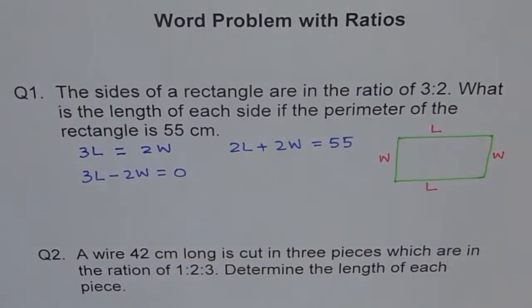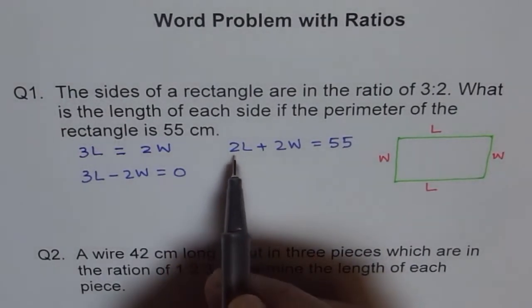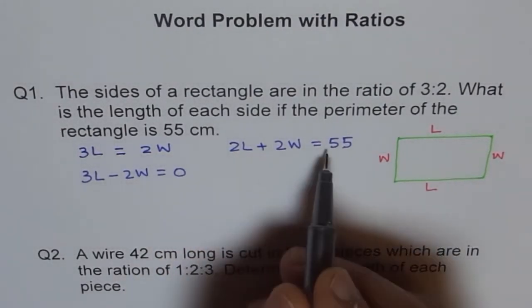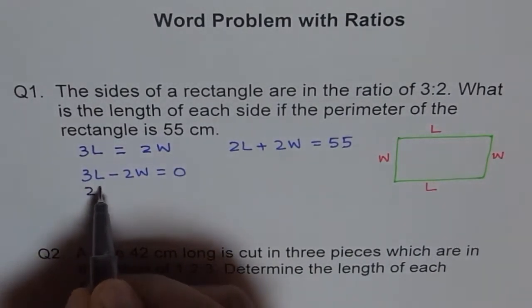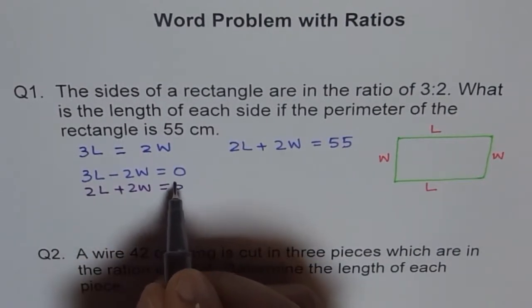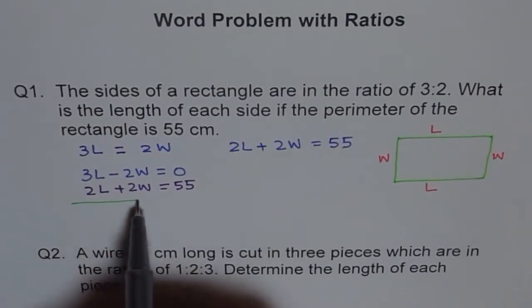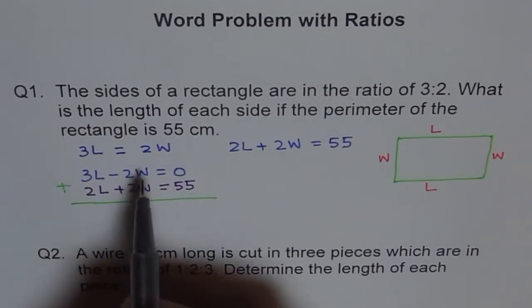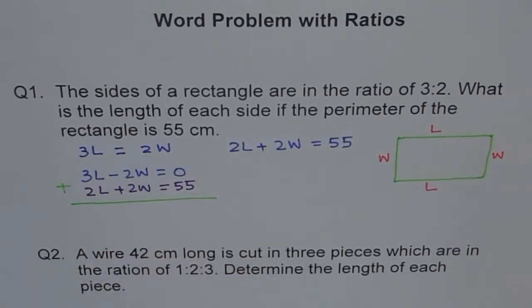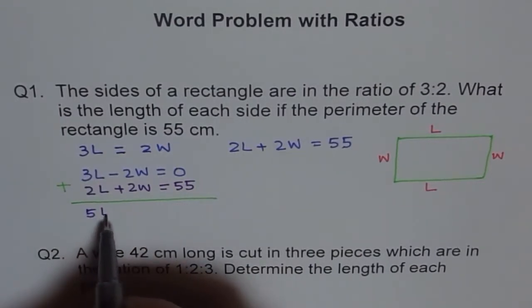Let me show you by writing this equation just under this equation. Then you will understand better. So I am writing this equation, the perimeter equation, here. So it becomes 2L plus 2W equals to 55. The idea here is to explain you the process and the thinking going behind. Now if I add these two equations, let's say we add them up, then what do we get?